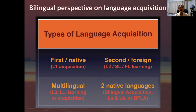Another interesting type of language acquisition is bilingual acquisition, so it means learning or acquiring two languages at the same time, and usually from infancy, from the time of a baby. We don't say L1 and L2 because they're both native languages. So we would call them LA and LB, or BFLA, which means bilingual first language acquisition. It's a little bit strange, but I make it easy to understand by saying two native languages.